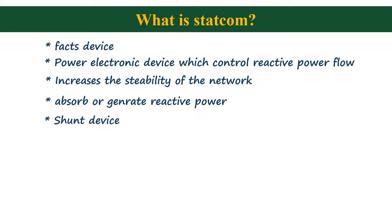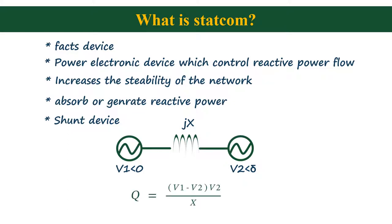Now I will explain to you the basic idea of reactive power transfer between any two networks. Suppose we have two sources connected with a series reactance of value x in between. Suppose the voltage of first source is V1 angle 0, and voltage of second source is V2 angle delta. Now the equation for reactive power transfer between these two networks is given by Q is equal to V1 minus V2 into V2 all divided by x. So from the equation it is clear that reactive power is directly proportional to the difference of the magnitude of two voltages.